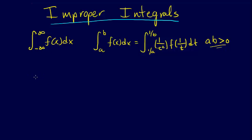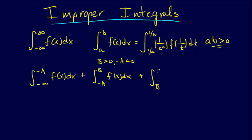We could split that into three pieces. For example, we could do the integral from negative infinity to negative A of f(x)dx, plus the integral from negative A to B of f(x)dx, plus the integral from B to infinity of f(x)dx, where B is greater than 0 and negative A is less than 0.